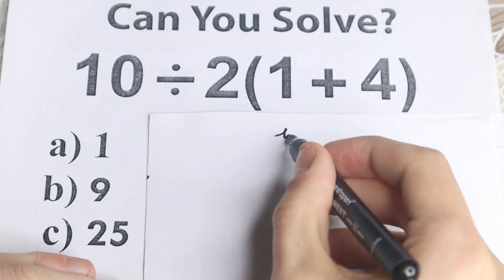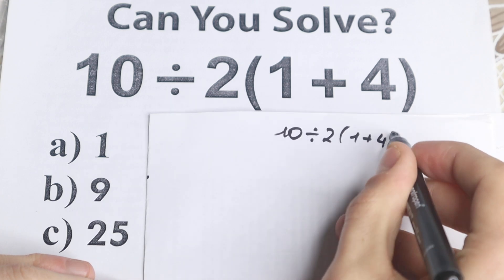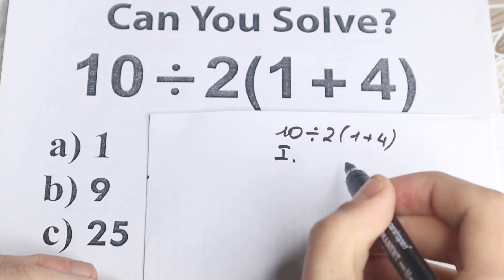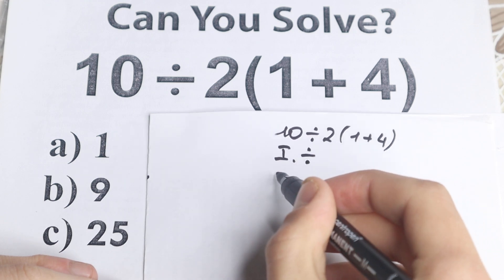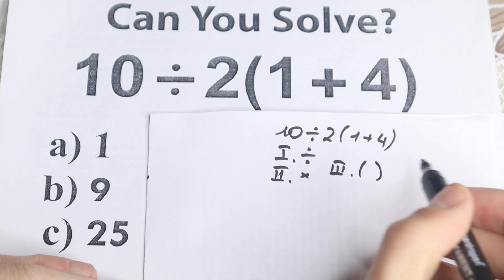Because a lot of students, okay, we have like 10 divided by 2 and in parentheses 1 plus 4. The first part of students start with like division. The second part of students start with multiplication and the third part of students start from parentheses.